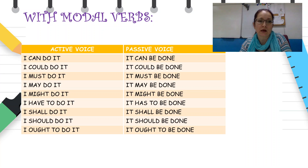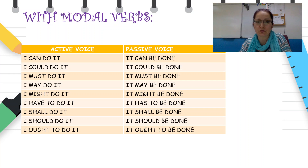Modal verbs have simple passive. 'I can do it' → 'It can be done.' 'I could do it' → 'It could be done.' 'I must do it' → 'It must be done.' 'I may do it' → 'It may be done.' 'I might do it' → 'It might be done.' 'I have to do it' → 'It has to be done.' 'I shall do it' → 'It shall be done.' 'I should do it' → 'It should be done.' 'I ought to do it' → 'It ought to be done.'